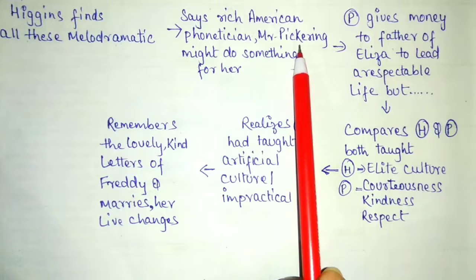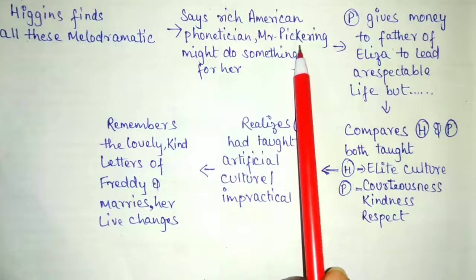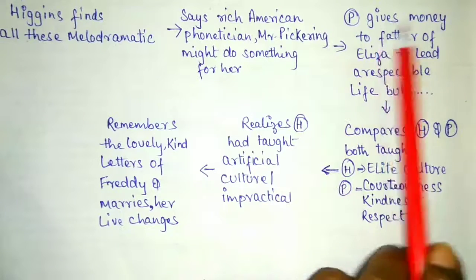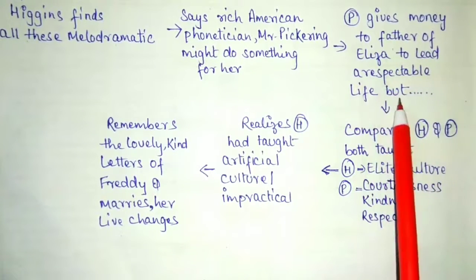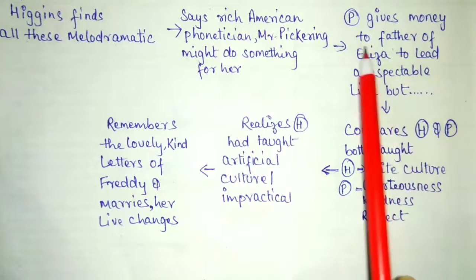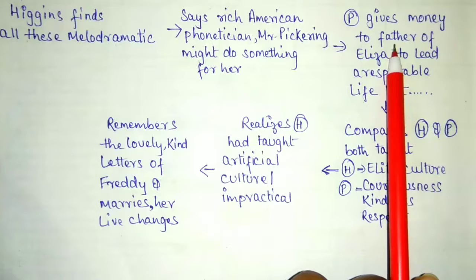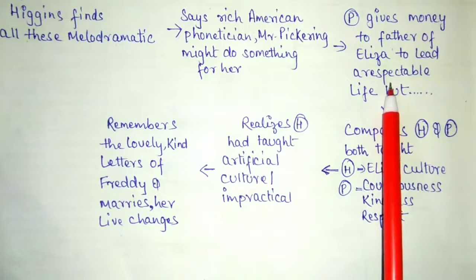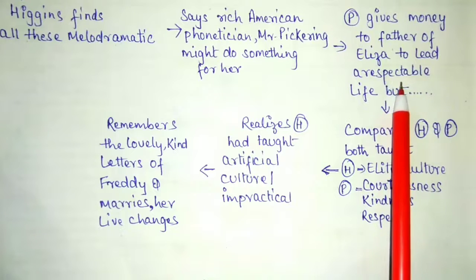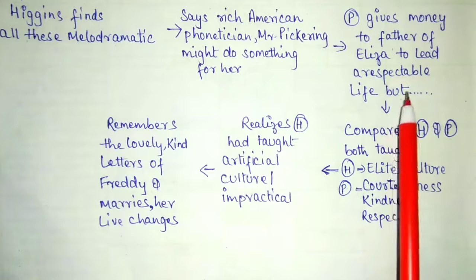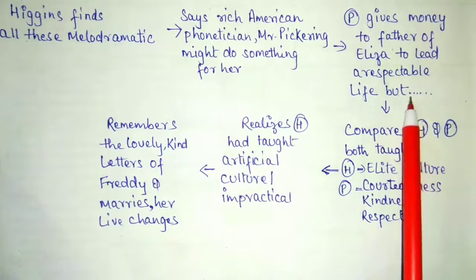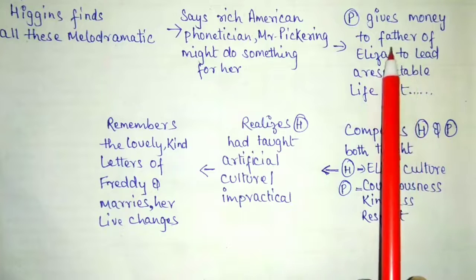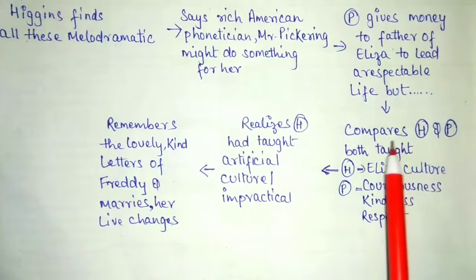Pickering was a very kind gentleman — a true, sensitive human being. He gives money to Eliza's father to lead a respectable life. Earlier, the father was a drunkard, and we can imagine what kind of life he used to lead. When he gets money from Pickering he was bound to lead a respectable life, but he did not enjoy it because he was happy leading a carefree life as a drunkard — so he was not a caring father.